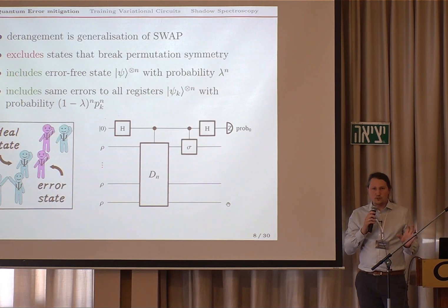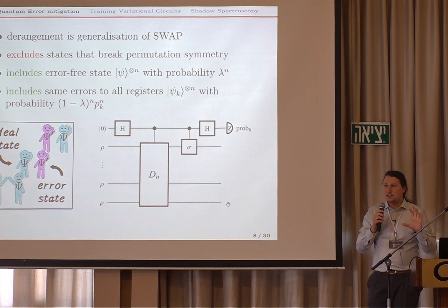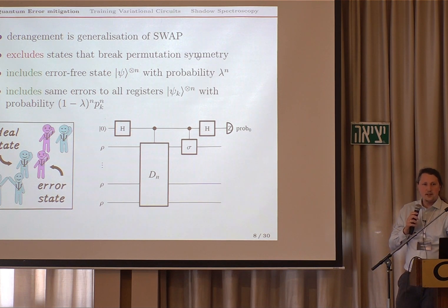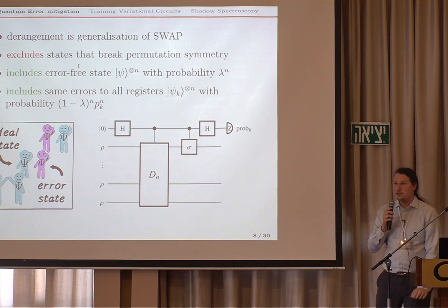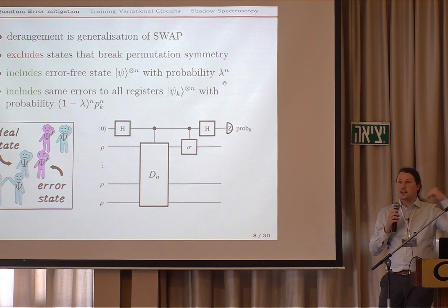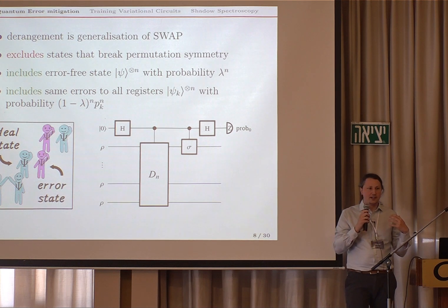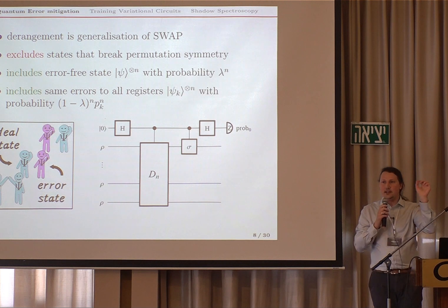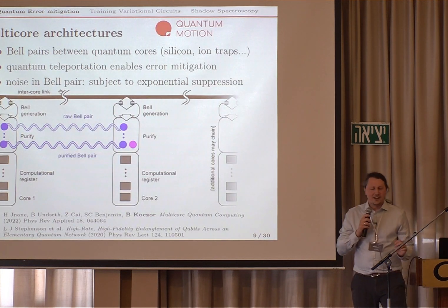We can generalize this idea to more complicated permutations of the registers, and make a provable statement that this idea filters out any noise contribution that breaks global permutation symmetry — excluding any single or double error event if we have more than two copies. But it still includes the error-free state with probability lambda to the power of n. That's a price we pay, because even the ideal event is scaled down exponentially. At the same time, error events that can contribute to our measurement process are only those that respect permutation symmetry — ones where the exact same errors happen to each and every copy — and those are exponentially unlikely.